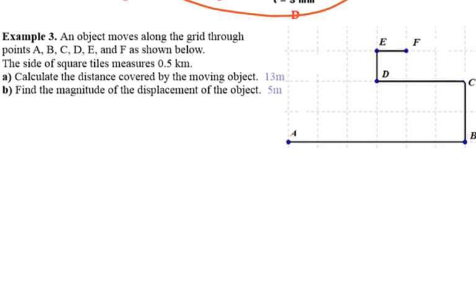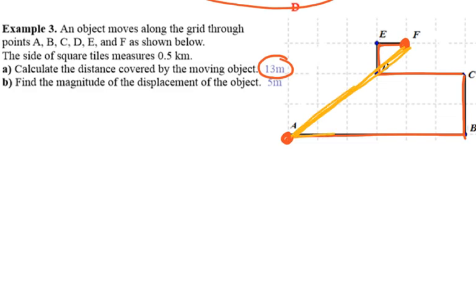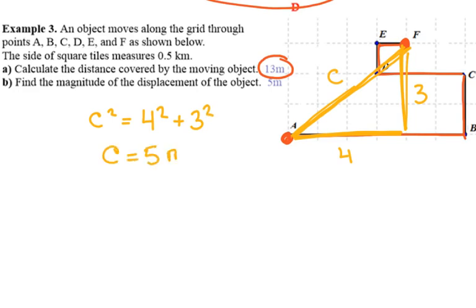In another example, a person travels 6 + 2 + 3 + 1 + 1 = 13 units in total distance from A to F. But the displacement — the straight-line distance — requires looking at the right triangle formed by the net horizontal and vertical changes: 4 units and 3 units. Using the Pythagorean theorem, c = 5 units.